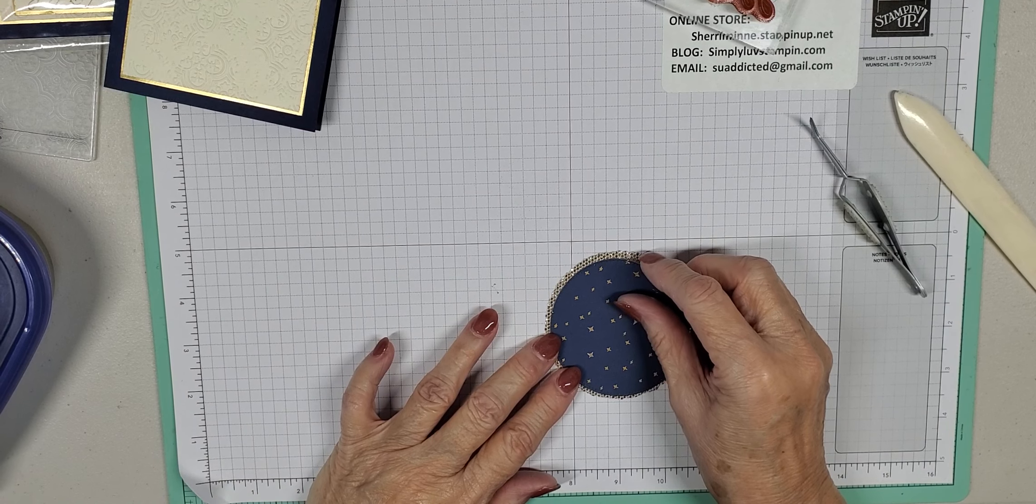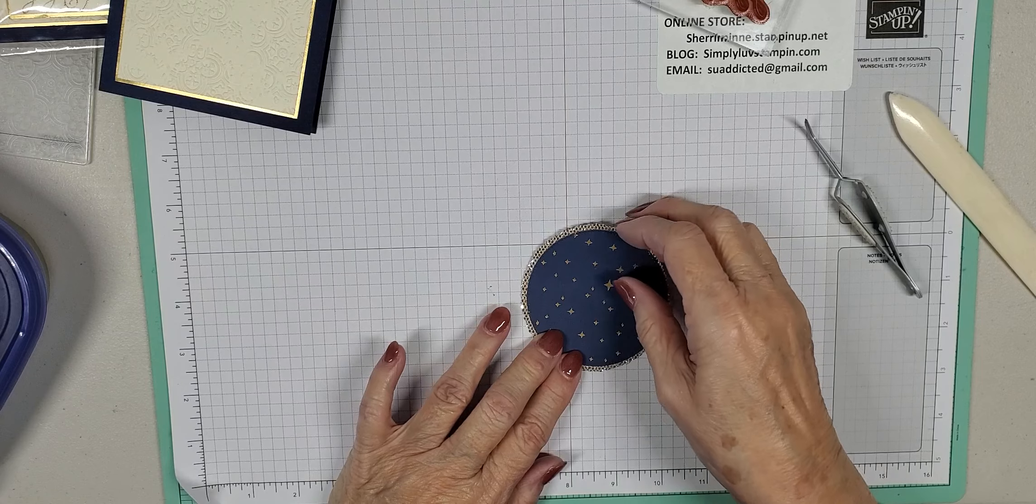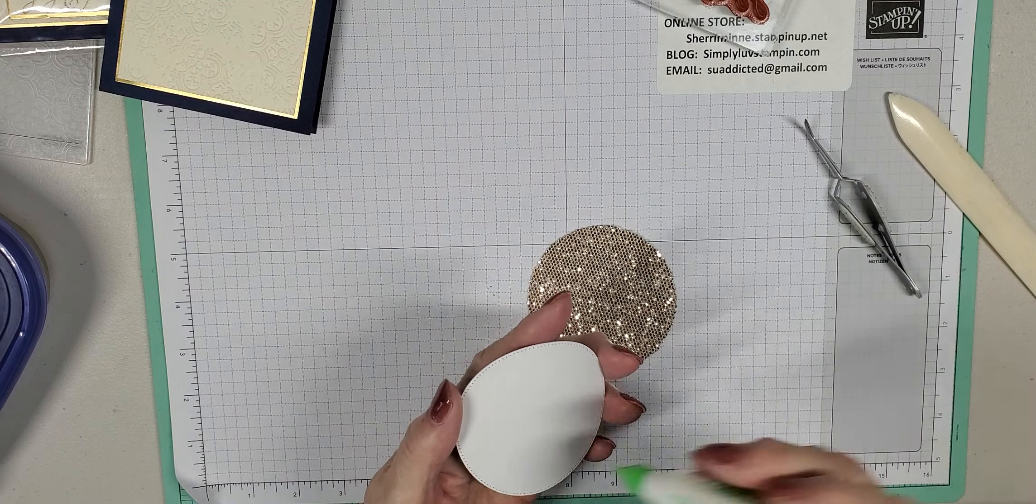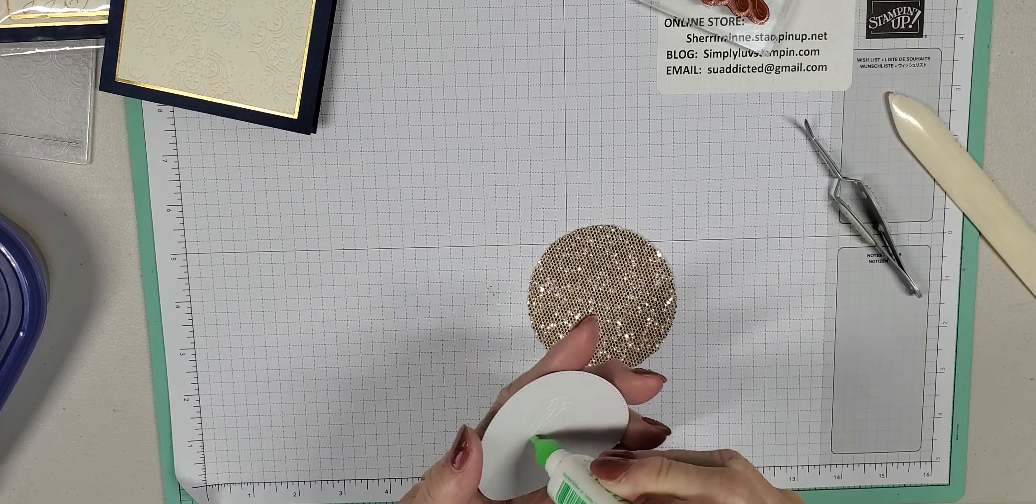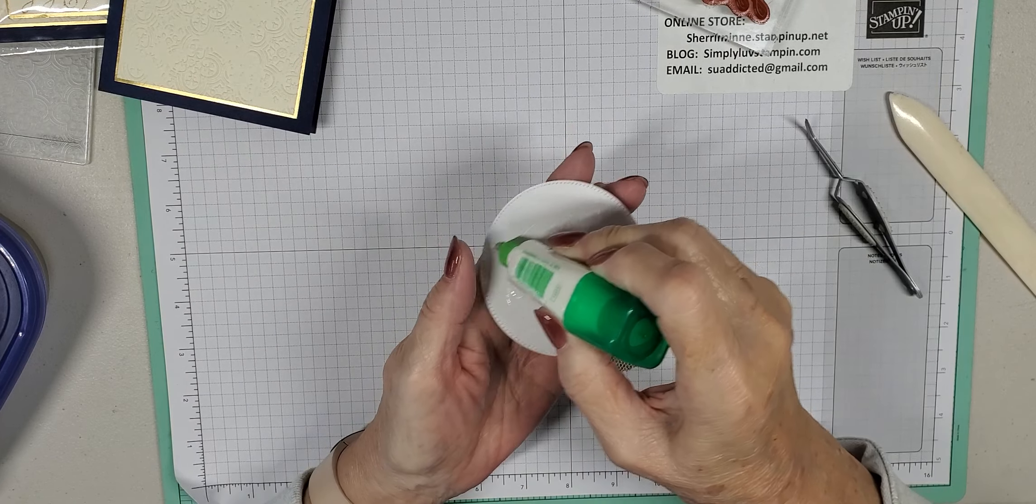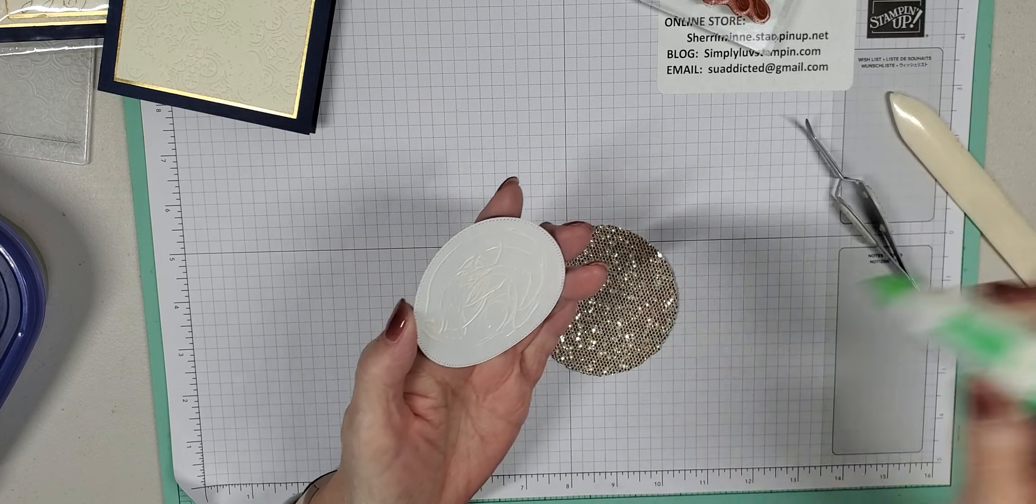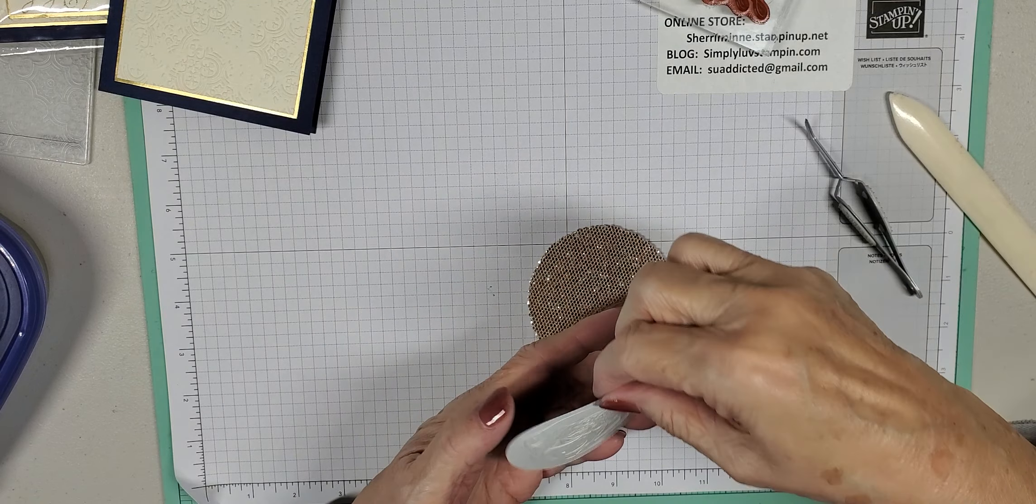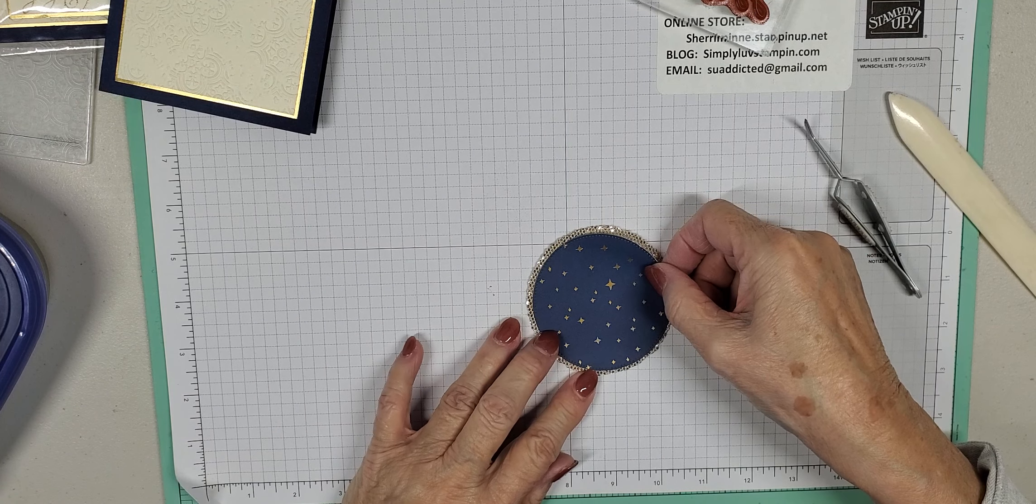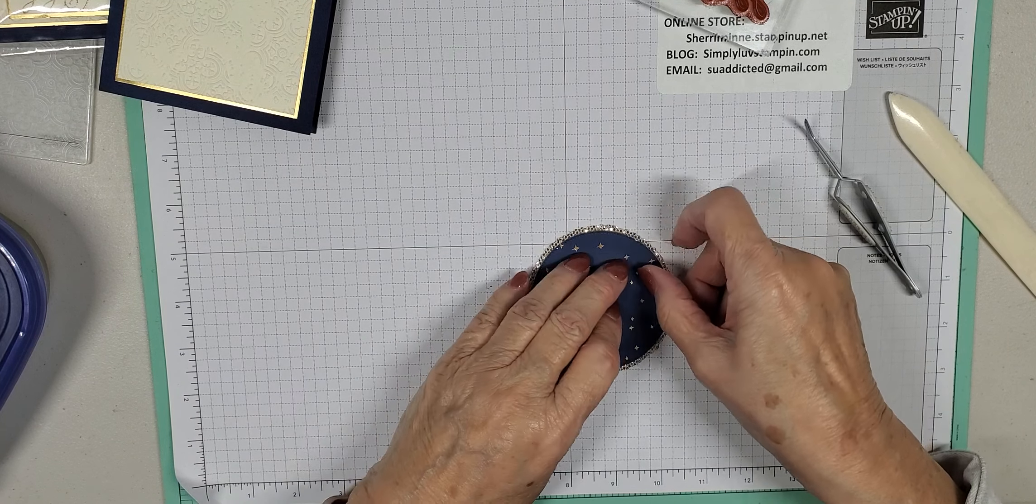Now we're going to take this and this, and we are going to glue this piece of designer series paper onto our More Dazzle. I'm just going to put glue on here. Now you do want to let this sit a minute because this is a glimmer paper and it's kind of a very rough texture, and so to get this to stick the way you want to takes a little bit of time.